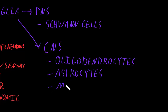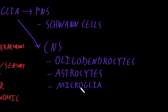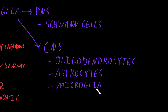Microglia are another type of glial cell of the central nervous system. The microglia are specialized cells that kill and/or remove foreign cells from the CNS, or abnormal neural cells, or debris. They also work with the immune system to fight off infections in central nervous system tissues.